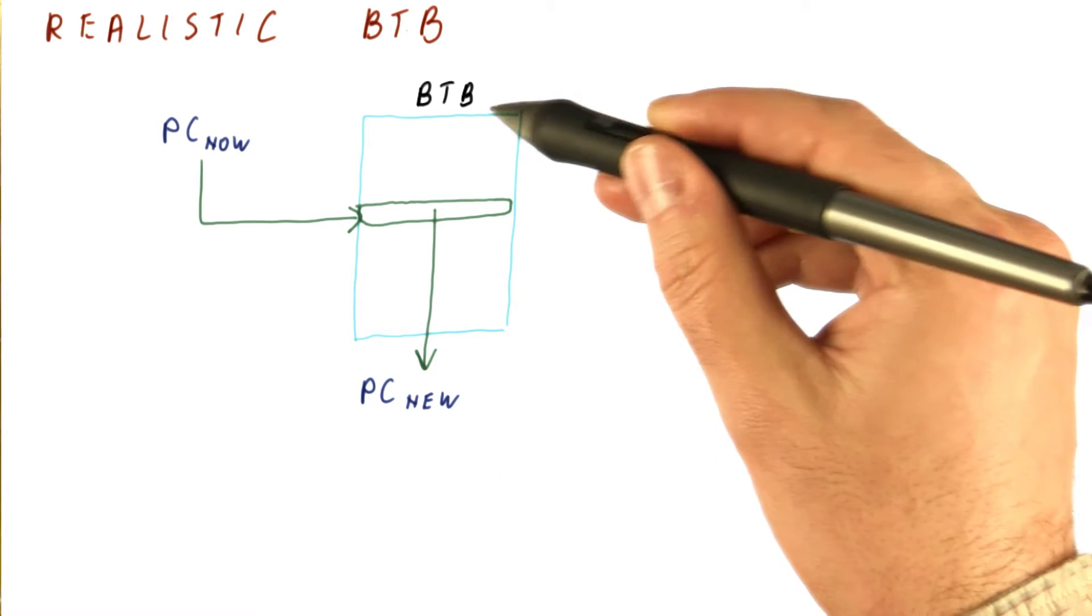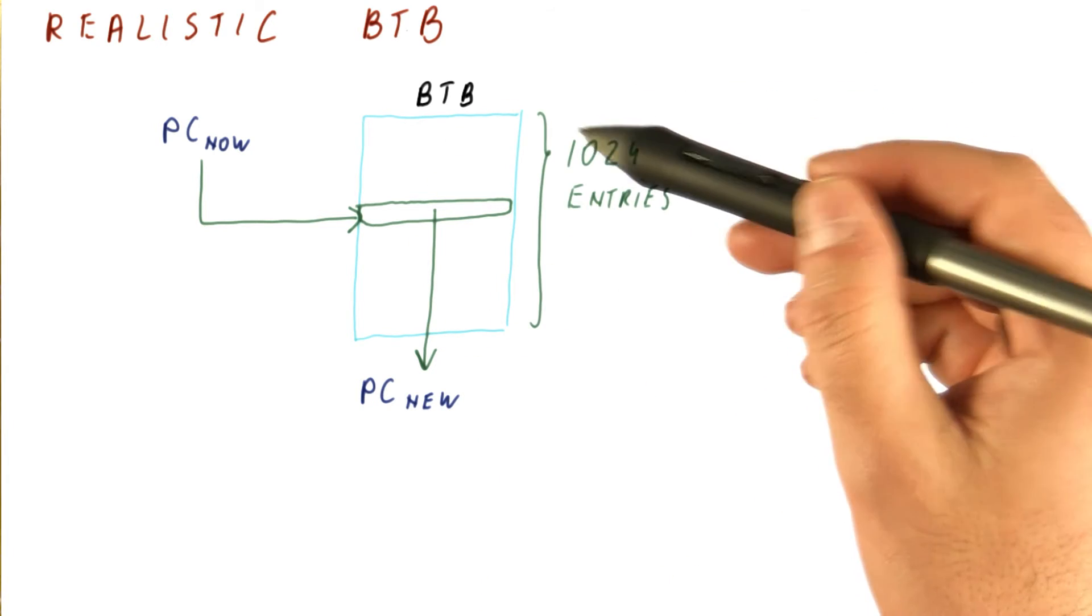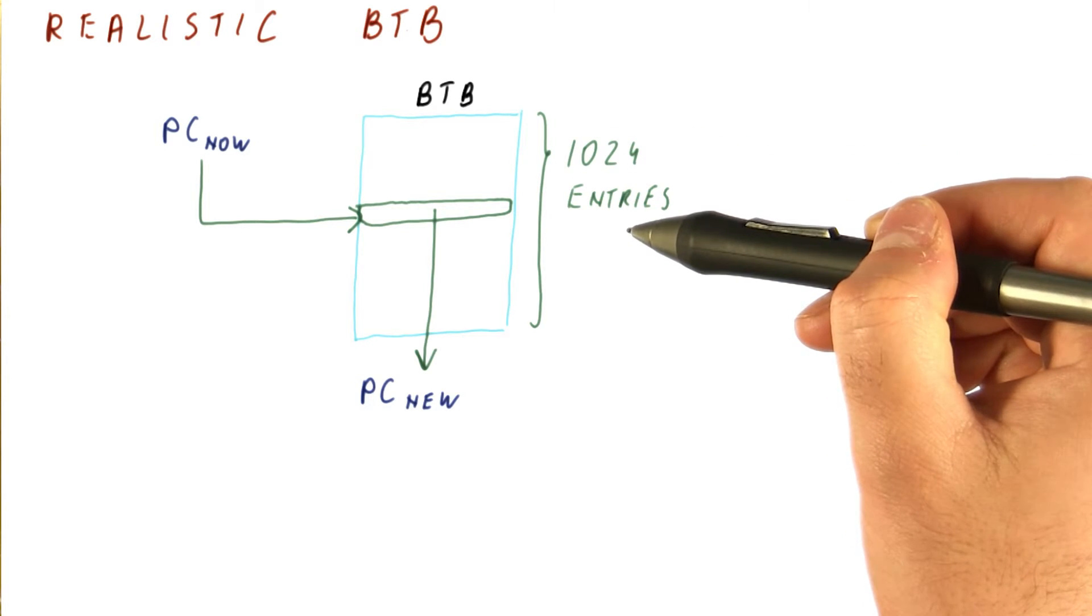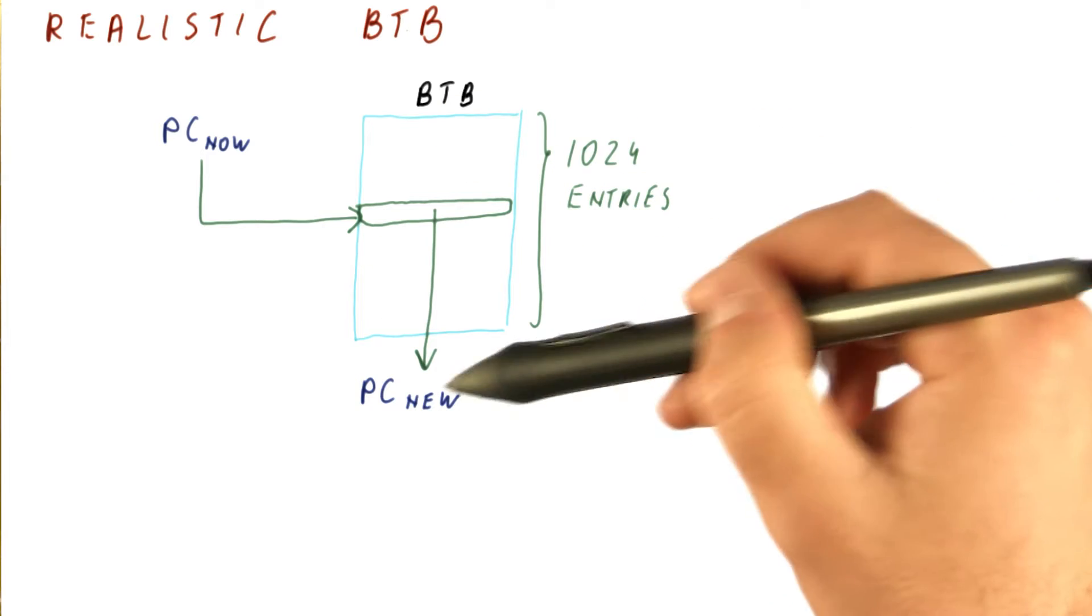So now we have relatively few entries in the B2B. Let's say that we do our timing experiments and we find that only 1024 entries can be accessed in one cycle.